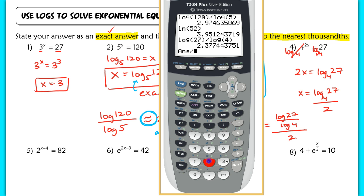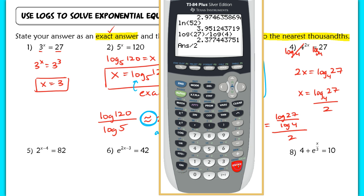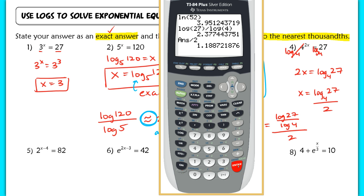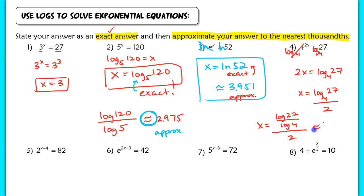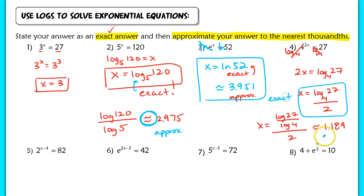In the calculator, first compute log 27 divided by log 4, hit enter, then divide that answer by 2. The result is approximately 1.189. The exact answer is log base 4 of 27 over 2, and the approximate answer is 1.189.